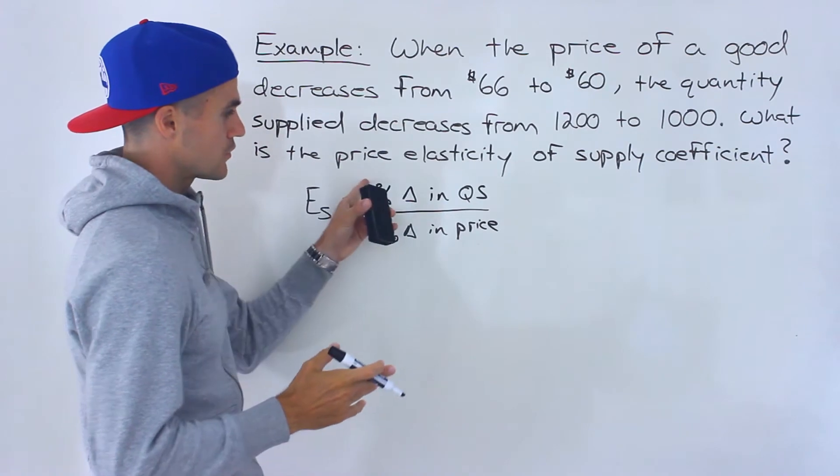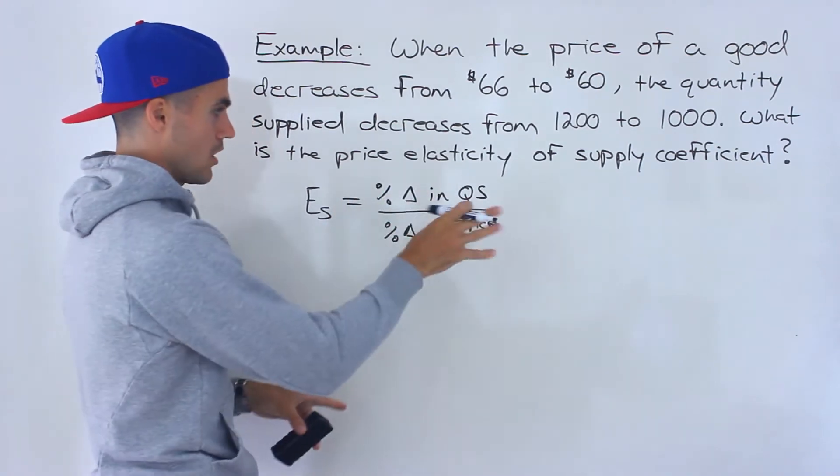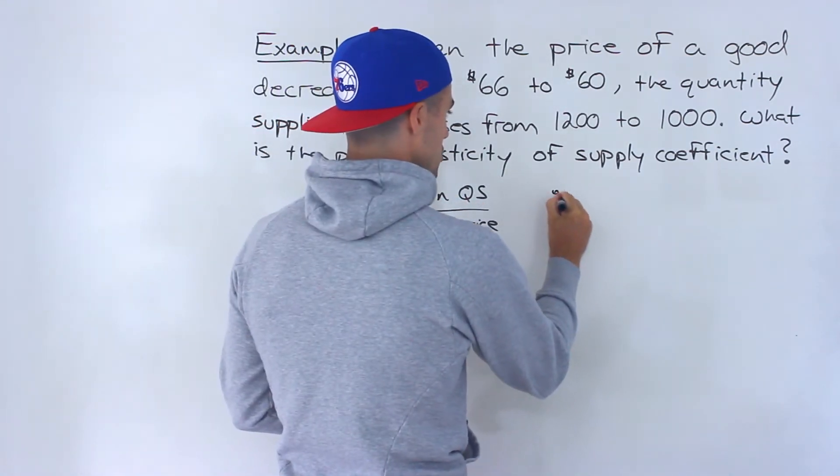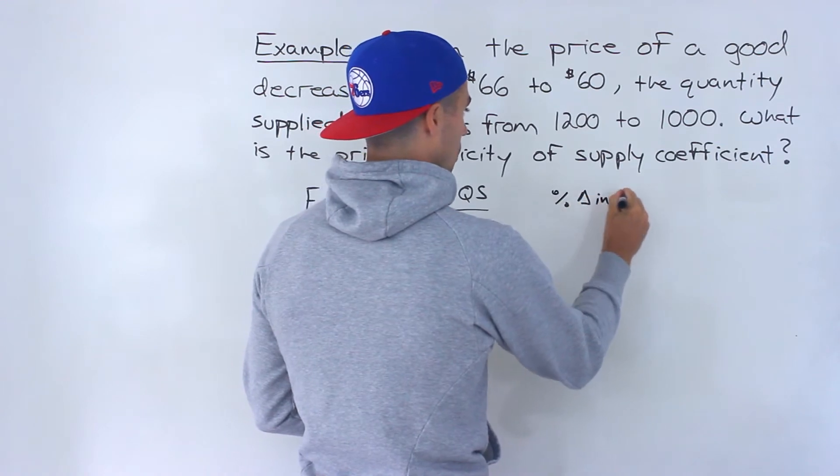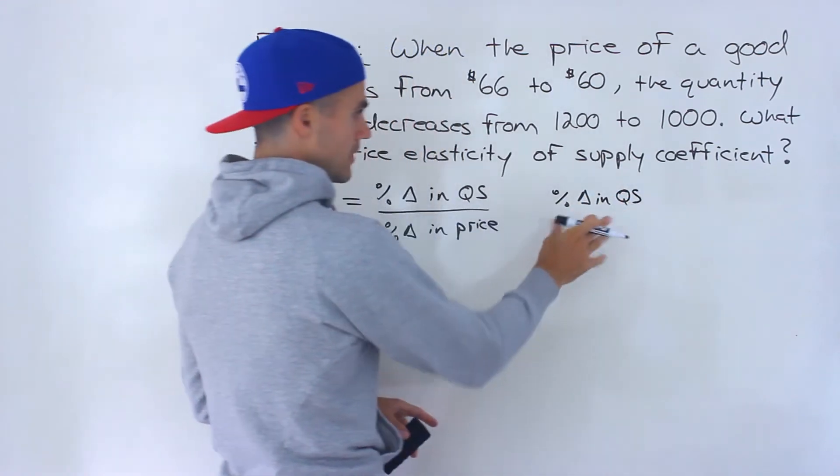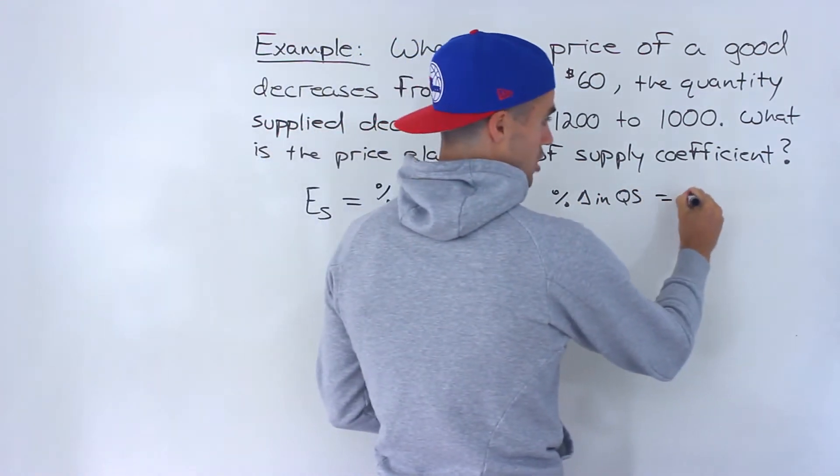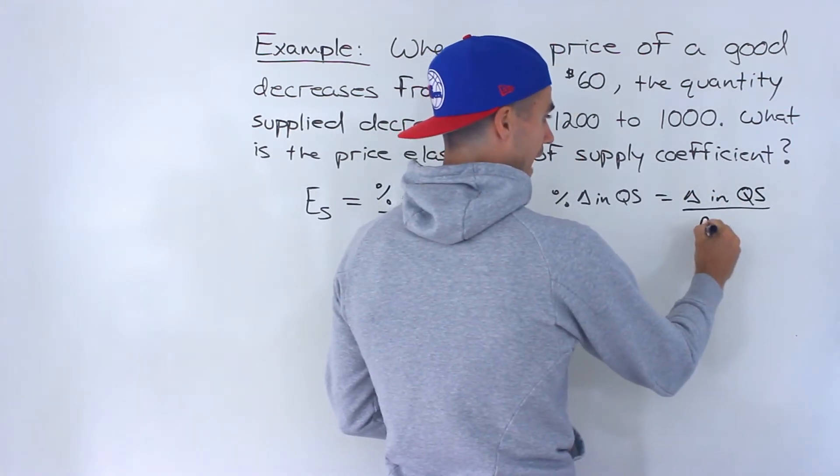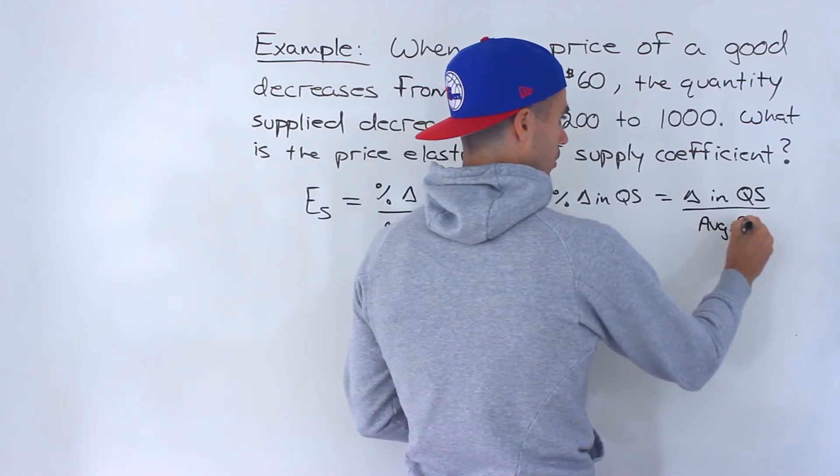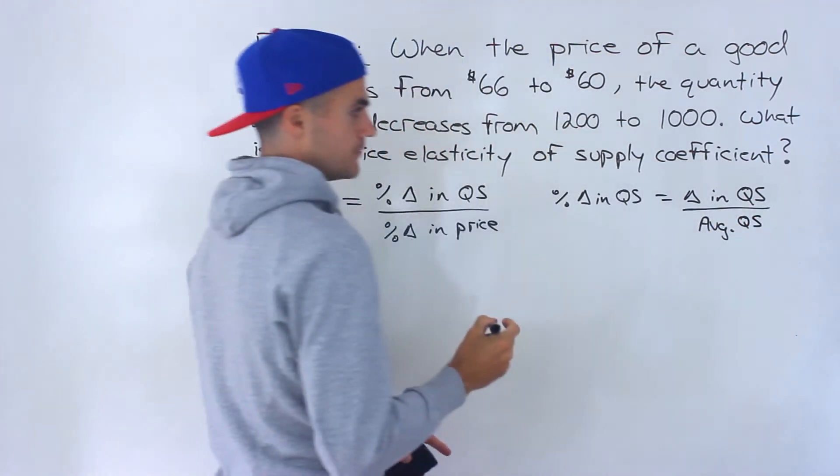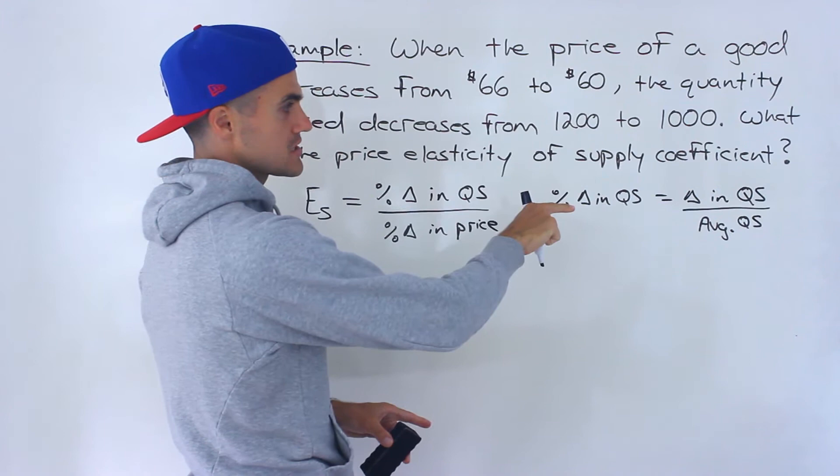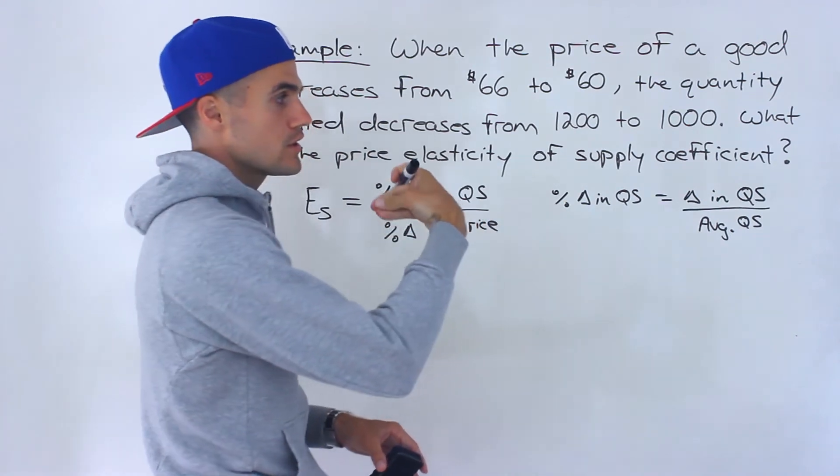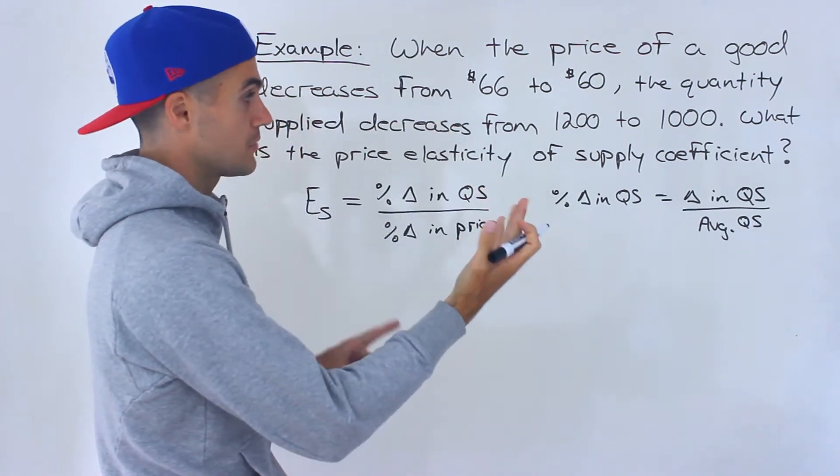And so what I'm going to do is first deal with the numerator. The percentage change in quantity supplied, basically the formula for this is the change in quantity supplied, just the absolute change, over the average quantity supplied. Now the change in quantity supplied is going to be the new quantity supplied minus the old.